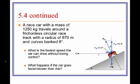Here we have a race car with a mass of 1,250 kilograms as it travels around a frictionless racetrack that has a radius of 670 meters. The curve is banked a total of 8 degrees. What I'd like you to calculate is what is the fastest speed the car can drive without losing control.